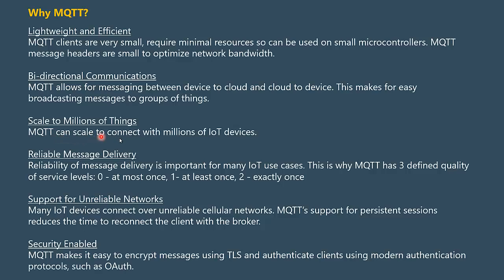MQTT can scale to connect with millions of IoT devices. Another feature is reliable message delivery — reliability is important for many IoT use cases. This is why MQTT has three defined quality of service levels: zero (at most once), one (at least once), and two (exactly once). MQTT also supports unreliable networks — many IoT devices connect over unreliable cellular networks. MQTT support for persistent sessions reduces the time to reconnect the client with the broker.